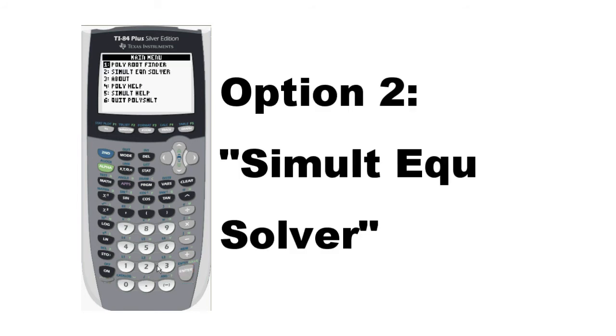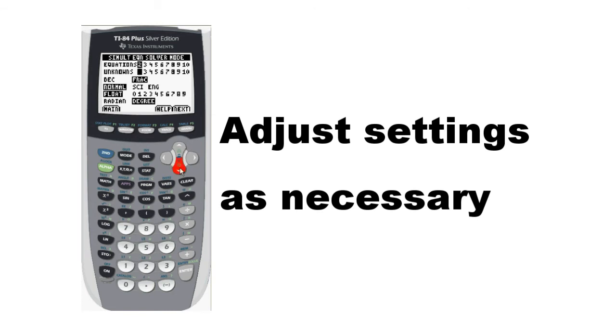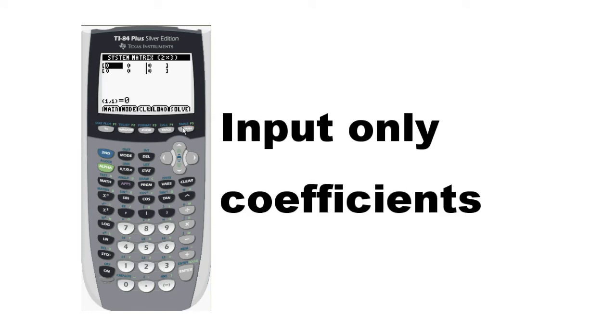Select Option 2, Simultaneous Equation Solver. You'll have a variety of options. We're going to start with the same problem as before, so keep the default settings. Now enter just the coefficients from your equations. It's important to first rearrange them the way we did when solving by elimination.